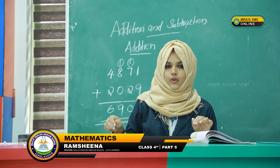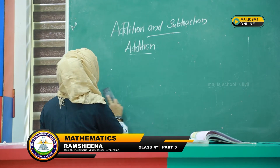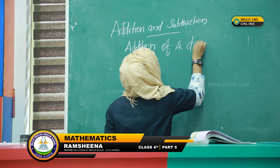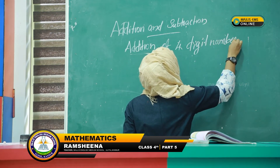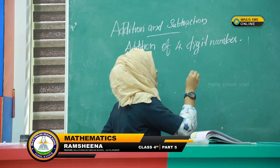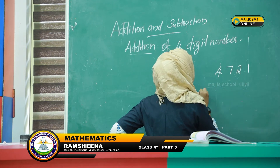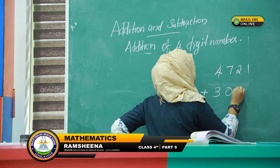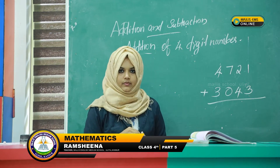Then addition of 4-digit number. Look at this number: 4721 add 3043. This is your number.